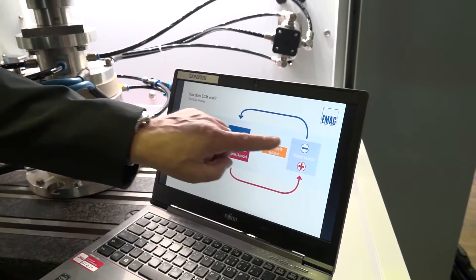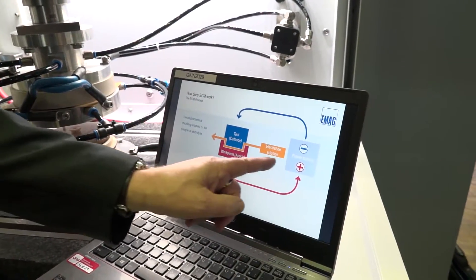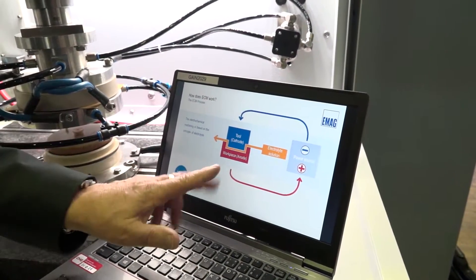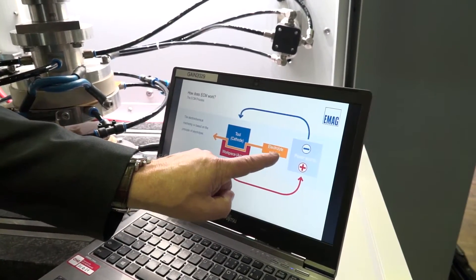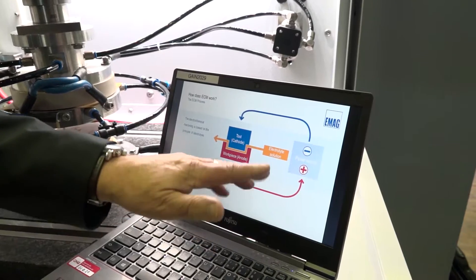We have the anode connected to the workpiece and here we have the electrolyte solution, the electrolyte flow.